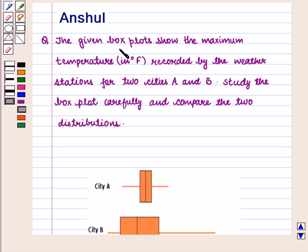The given box plots show the maximum temperature in degrees Fahrenheit recorded by the weather stations for two cities A and B. Study the box plot carefully and compare the two distributions.